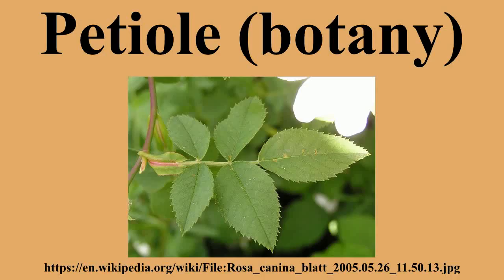In the grasses the leaves are apetioleate, but the leaf blade may be narrowed at the junction with the leaf sheath to form a pseudo-petiole, as in Pseudosasa japonica. In plants with compound leaves, the leaflets are attached to a continuation of the petiole called the rachis.